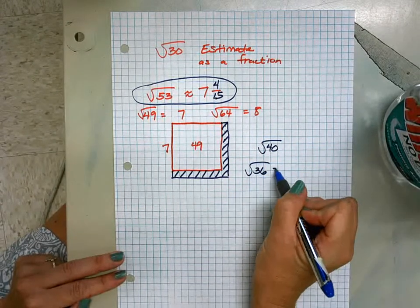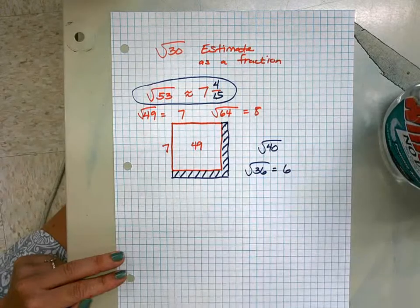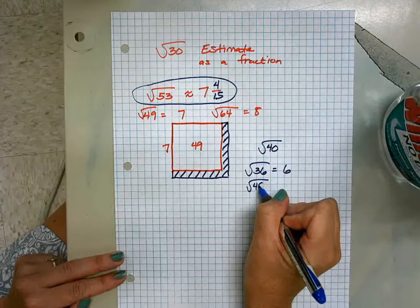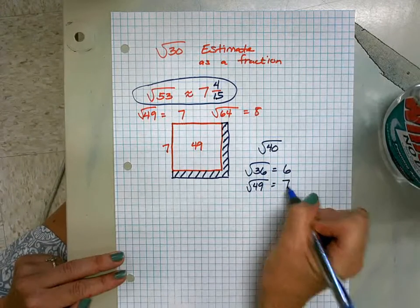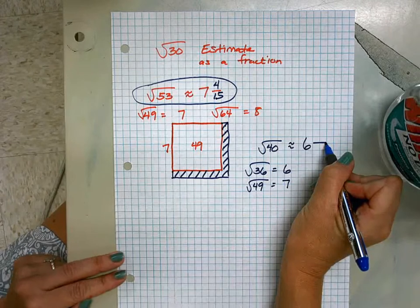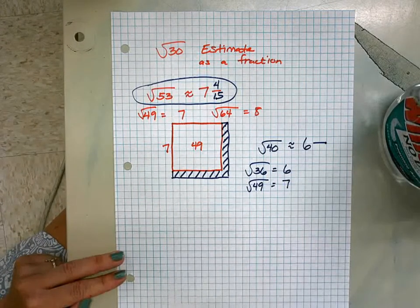Well it's in between the square root of 36, which is that nice rational number 6, and it's in between the square root of 49, which is 7. So I know it's 6 and something. Draw your squares. Pause me.